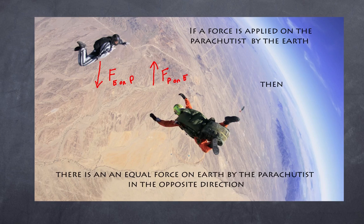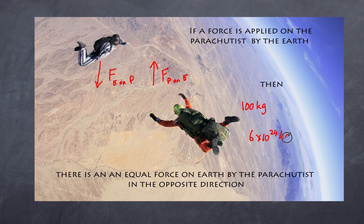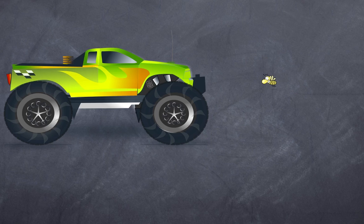So why does the parachutist do most of the moving? Let's say the parachutist is 100 kilograms. The Earth's mass is approximately 6 × 10²⁴ kilograms. Even though both apply the same magnitude of force on each other, that force has very little impact on a mass that large, but a much greater impact on 100 kilograms. That's why you do most of the moving — but you do apply a gravitational force on the Earth.